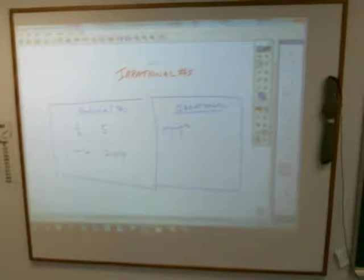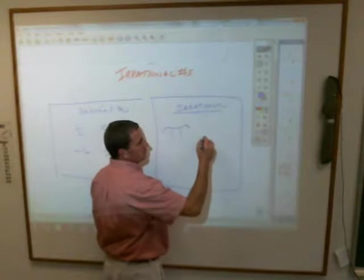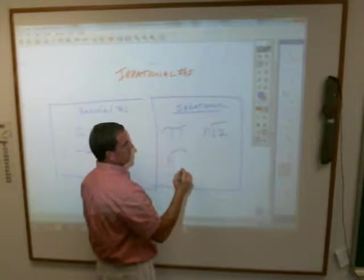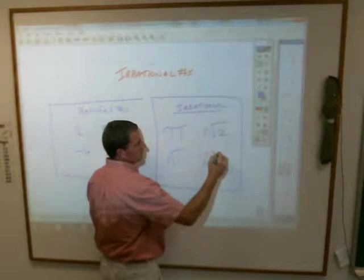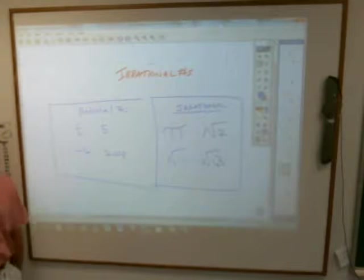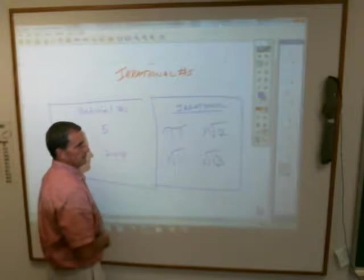And the other thing that are irrational numbers will be roots that don't work out. The square root of 2, the square root of 11, the square root of 13. All of those are irrational because they just don't work out nicely for us. You cannot get them to come out to nice and easy numbers.